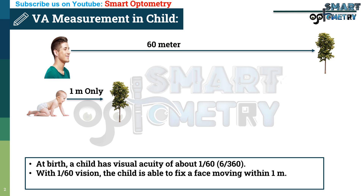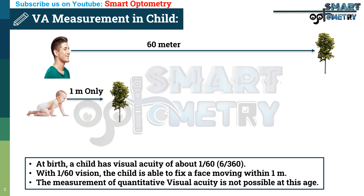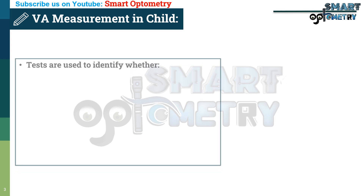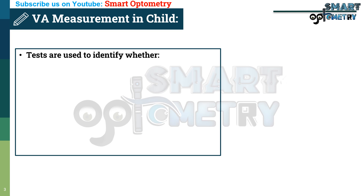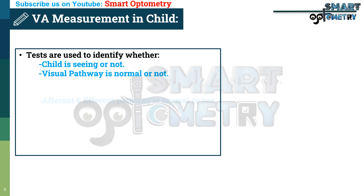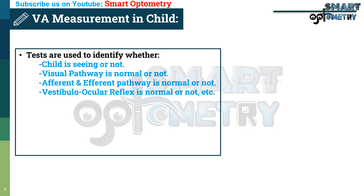With 1 by 60 vision, the child is able to fix a face moving within 1 meter. The measurement of quantitative visual acuity is not possible at this age. Tests are used to identify whether the child is seeing or not, whether the visual pathway is normal or not, whether the afferent and efferent pathway is normal or not, and whether the vestibular ocular reflex is normal or not.